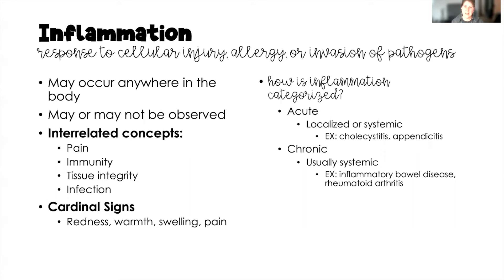Inflammation, much like infection, is categorized as acute or chronic. Acute inflammation is localized or systemic but confined to a single area or organ — for example, a cut on the leg that has become inflamed, or cholecystitis or appendicitis. Chronic inflammation is often a result of autoimmune disorders such as inflammatory bowel disease or rheumatoid arthritis, which cause more widespread, systemic inflammation.